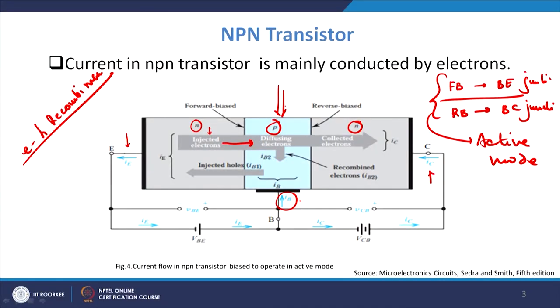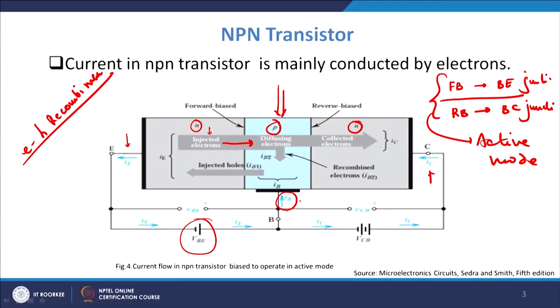The blue colored current arrows represent conventional current, not electron current. The base current is directed into the base because holes lost by recombination must be replenished. For example, if 10 electrons recombine with 10 holes, 10 holes from the base supply fed by VBE enter to replace them. The base current is very, very small because the number of holes available is very small, and therefore the probability of recombination is also very small.